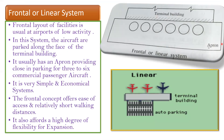Coming to the frontal or linear system, here we have a terminal building and the apron area. In this system, the aircraft are parked along the face of the terminal building. The frontal layout is usually used at airports of low activity, where there is less takeoff and landing activity. It usually has an apron providing close-in parking for three to six commercial passenger aircraft. It is a very simple and economical system.